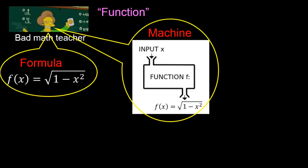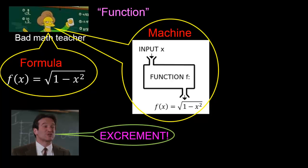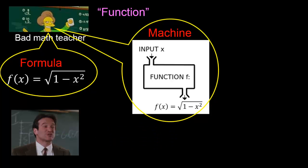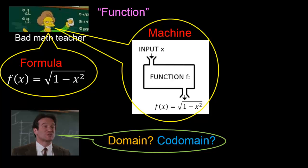In the previous video, we already saw what the famous mathematician Robin Williams thought about all this. He thinks that there are two big problems with thinking of a function as a formula or as a machine. The first big problem is that when we say a function is just a formula or a machine, we have failed to state what the domain and the co-domain are.